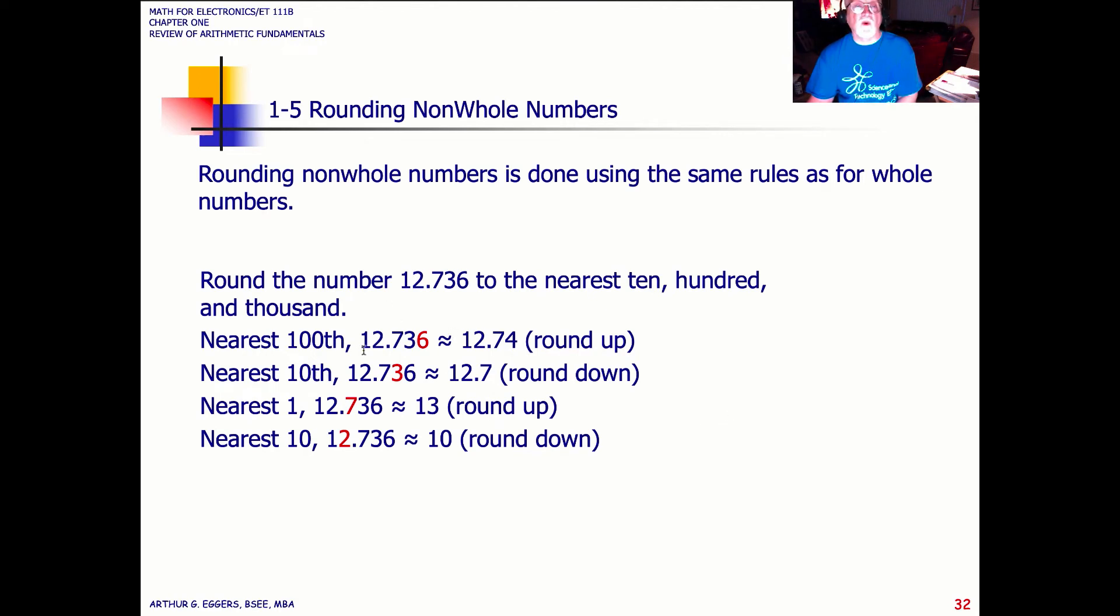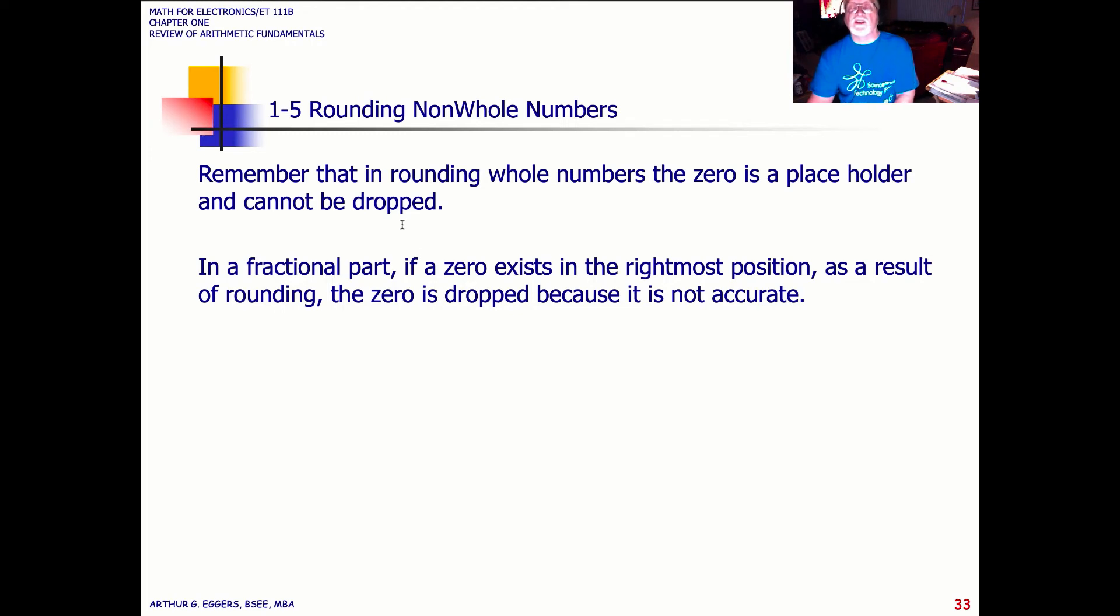An example here, to the nearest one hundredth, then this becomes 1274 to the nearest one hundredth. To the nearest tenth, three is next to the tenth, so that becomes a round down. To the nearest one, seven is next to the one, so we round up to the next value. And the same thing with the tenths digit. In rounding whole numbers, remember that in rounding whole numbers, the zero is a placeholder, but it cannot be dropped. If a zero exists in the rightmost position, as a result of rounding, the zero is dropped because it's not accurate.